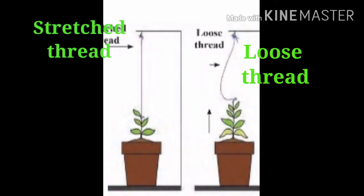Try this. Tie a thread to the tip of a potted sapling. Keep the thread stretched and tie it to a peg or a nail above the plant. What do you observe after 10 to 15 days? What tells us that the plant has grown taller?